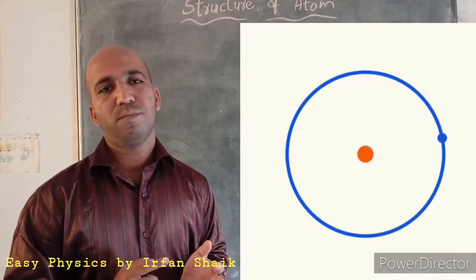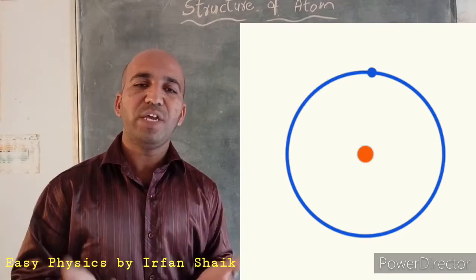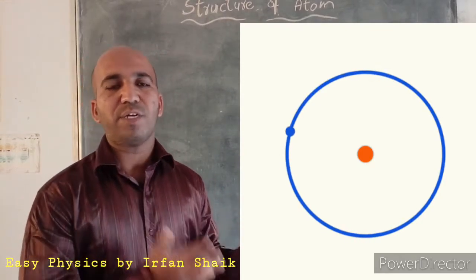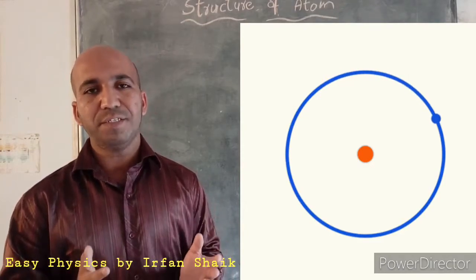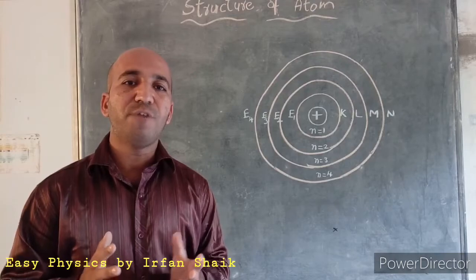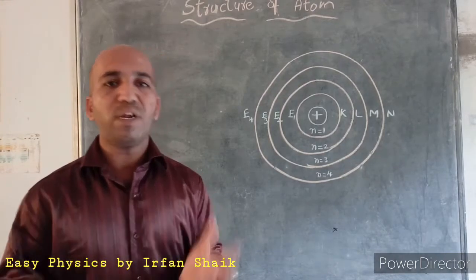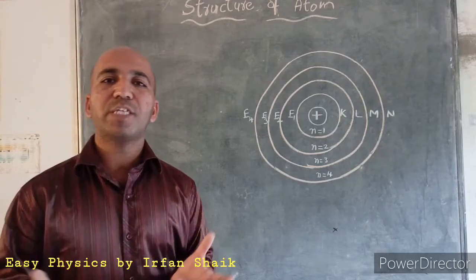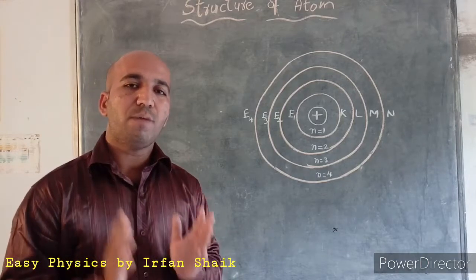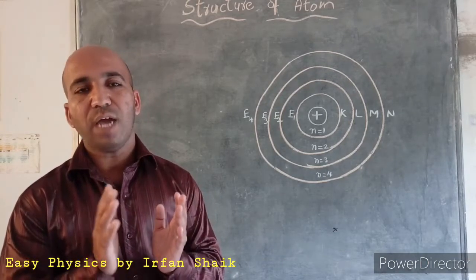The hydrogen atom has only one electron, and Bohr successfully explained its structure. However, the main defect of Bohr's atomic model is that he was unable to explain the structures of other atoms — that is, atoms that have more than one electron. So Bohr's atomic model is applicable only to the hydrogen atom.